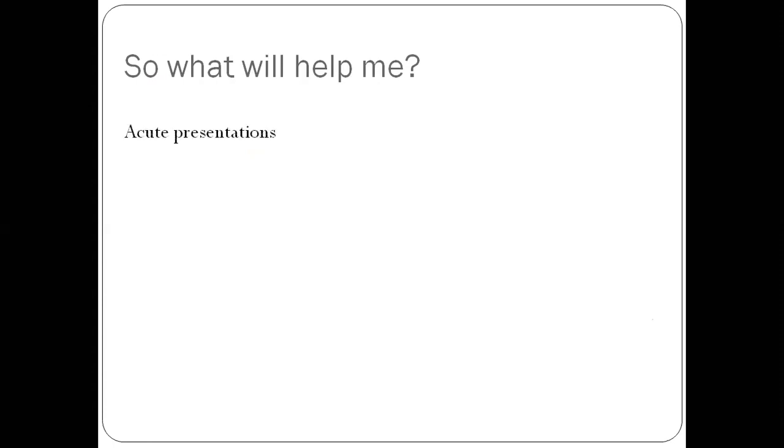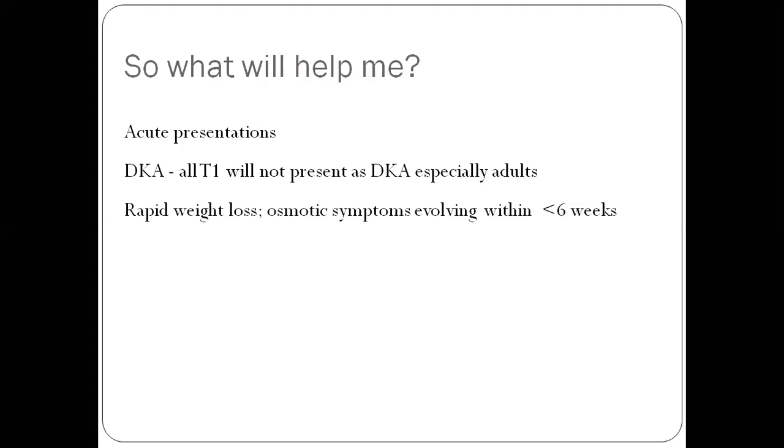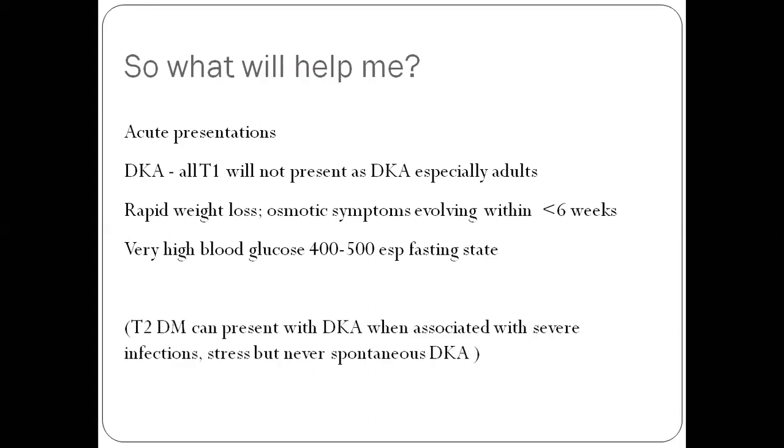So these two factors, age and obesity, apparently don't seem to help you diagnose type 1 diabetes. So what will help you? The presentation. Type 1 diabetes is likely to have an acute presentation. Not all type 1 diabetes will present with DKA, especially adults will not. But if you have rapid weight loss, if you have osmotic symptoms that evolve in less than 6 weeks, all these point towards type 1 diabetes. If you have very high blood glucose, 400-500 fasting value, that points towards type 1 diabetes. Type 2 diabetes can also present with DKA, but only when associated with severe infections or stress. Spontaneous DKA will not occur in type 2 diabetes.